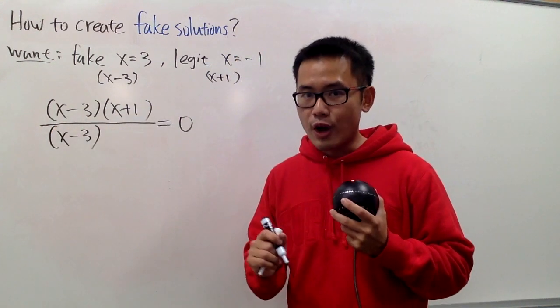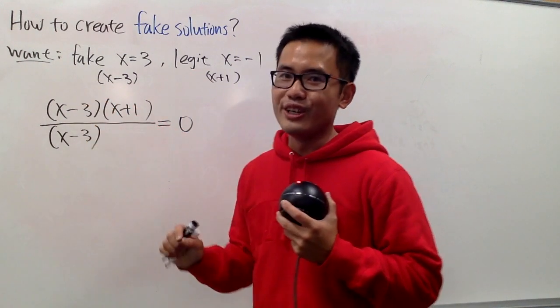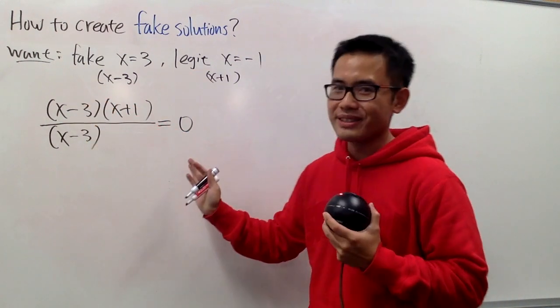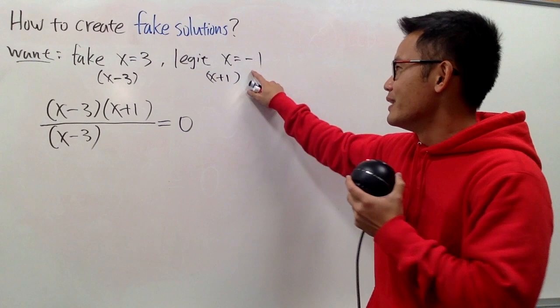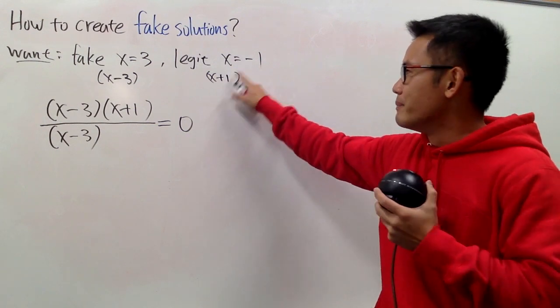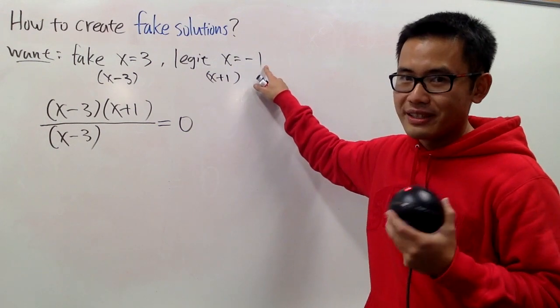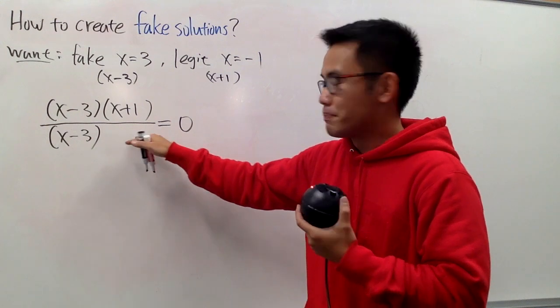When you do so, in fact, you create a 0 over 0 situation, and that's the bizarre part. And now, if you want to have x equal to negative 1 being the legit, don't divide x plus 1.